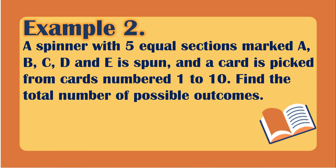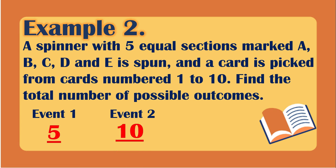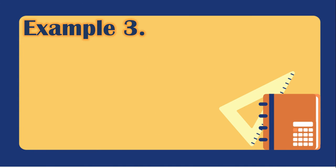Example number two: a spinner with five equal sections marked A, B, C, D, and E is spun, and a card is picked from cards numbered one to ten. Event one — the spinner — has five possible outcomes. Event two — the cards — has ten possible outcomes. Multiplying, the total is 50 possible outcomes.